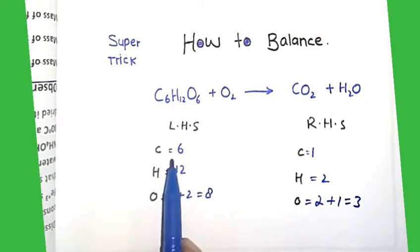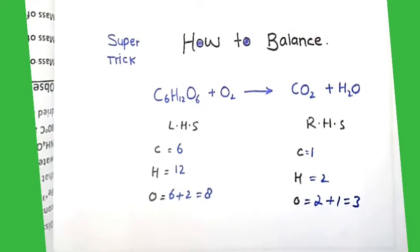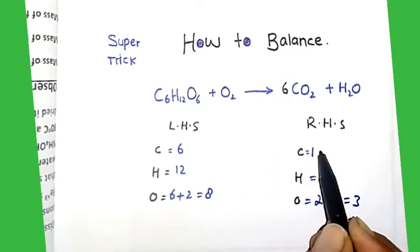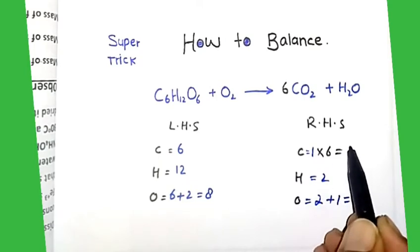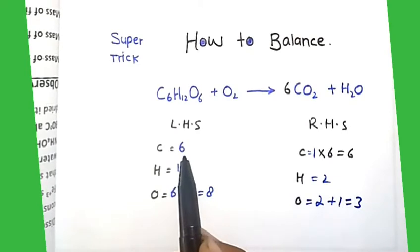First we balance carbon. Here is 6 and here is 1, so we multiply by 6. Then 6 times 1 equal to 6. The carbon is balanced. Here is 6 and here is 6.